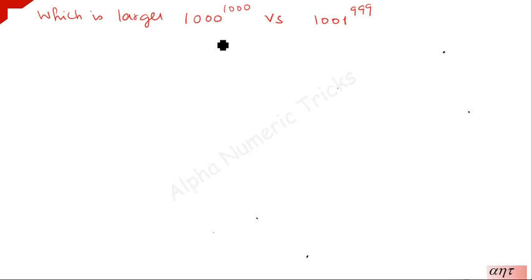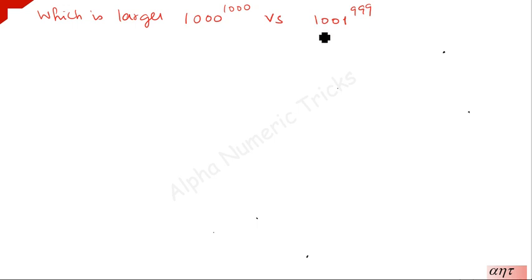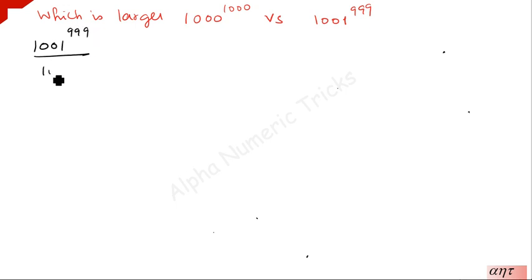Which number is larger: 1000 to the power 1000, or 1001 to the power 999? What we have to do is divide one number by the other. Here we divide 1001 to the power 999 by 1000 to the power 1000.